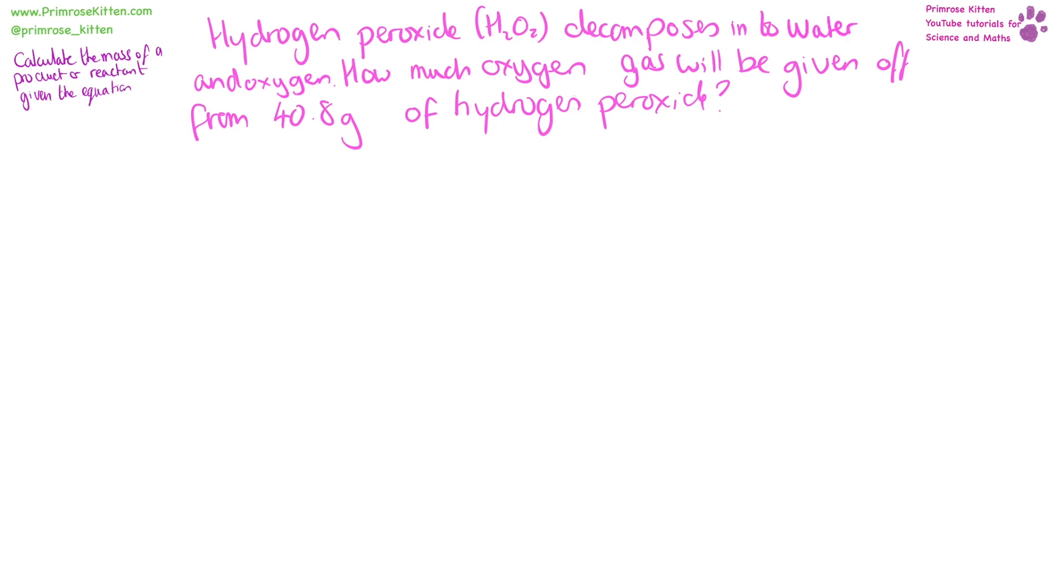This is an incredibly complicated question which combines a lot of skills. First of all you have to work out the formula of things, work out the equation, balance the equation and then finally work out the amount of hydrogen peroxide. We have hydrogen peroxide decomposing into water, H2O and oxygen gas. Now we need to balance the equation.